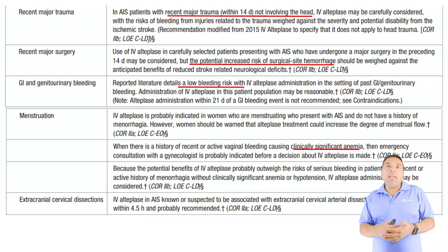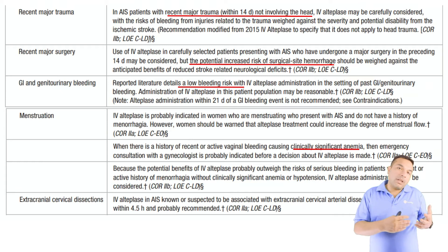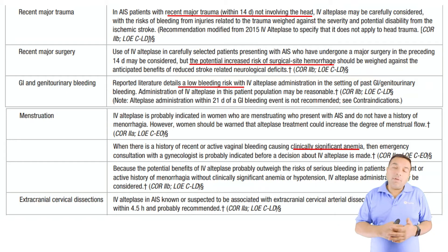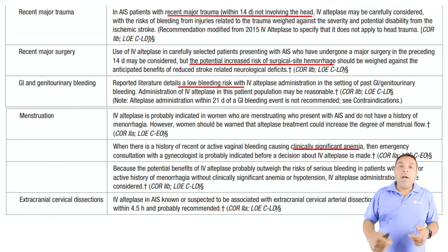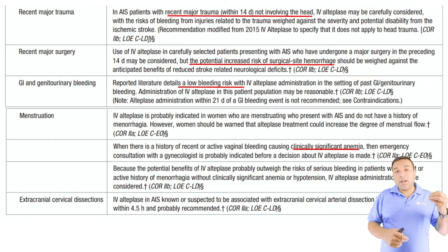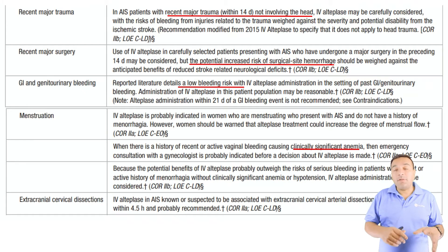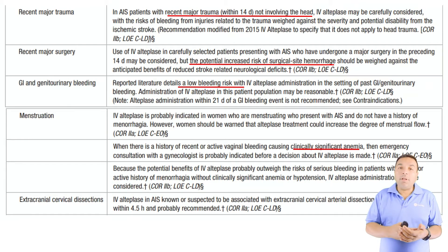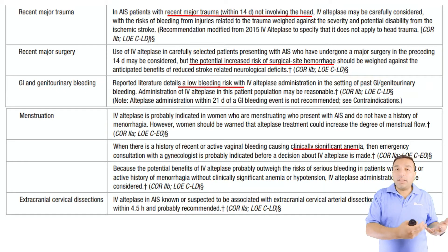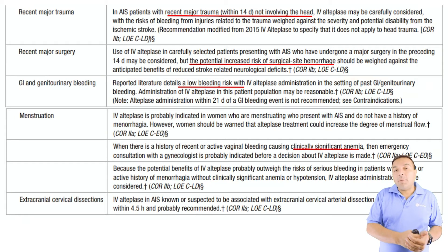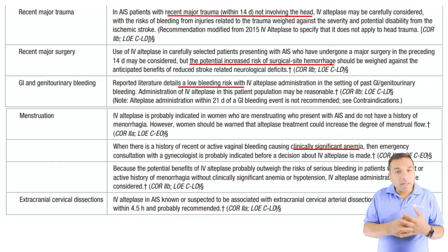Recent major surgery within the last 14 days: this comes up fairly commonly, especially with femur fractures where you're considering fat emboli. If you see a large vessel occlusion, send the patient for thrombectomy, but if you can't, consider giving TPA. You must weigh the risk of bleeding from the surgical site, consult the surgeon as soon as possible, and give TPA if the patient qualifies and is eligible.